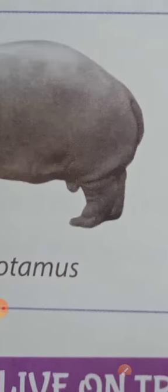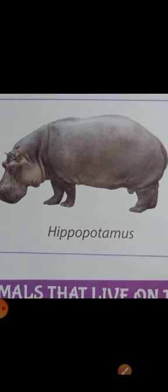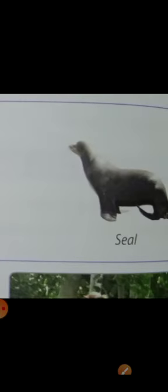Now let us learn about the animals that live both on land and in water. The skin of these animals allows water and air to pass through it. You can see in this picture: hippopotamus, frog, and seal.